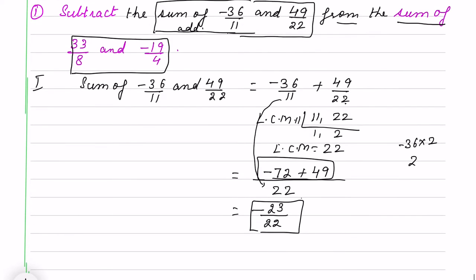Now what we have to find? We have to find the second sum. What will be that? Second sum is 33 by 8 and minus 19 by 4. So I am writing in bracket because there are two signs here. I will take LCM of 8 and 4. It is 8. It is 33 plus sign.